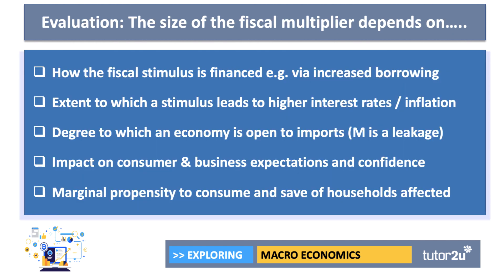What determines the size of the multiplier effect? What factors might influence the overall coefficient of the fiscal multiplier? Let me suggest five evaluation points. The size of the effect depends on, first of all, how the stimulus is financed. Is it financed by an increase in government borrowing? We know the state is already running a big budget deficit and national debt is going up. Is the government prepared to borrow more — another 10, 15, 20 billion pounds — to finance the fiscal stimulus? Typically, the multiplier effect is bigger if you do that than if you raise taxes in the near term to help fund the extra spending.